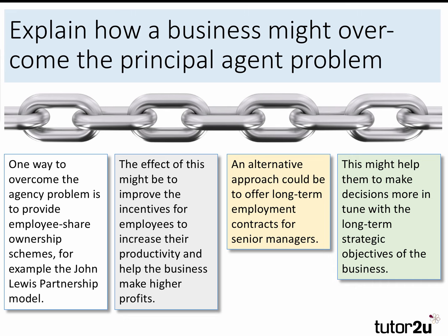This is what we mean by chains of reasoning. The word I would encourage you to use a lot in economics is the word 'might.' We're not being asked to evaluate issues to do with the principal agent problem — we're asked to explain here. But 'might' sends a subliminal message to the examiners: there's always a lot of uncertainty in economic analysis. Share ownership schemes can work, but sometimes they can also have unintended consequences, and there might be better alternatives to the two mentioned here — but that's really for your evaluation.